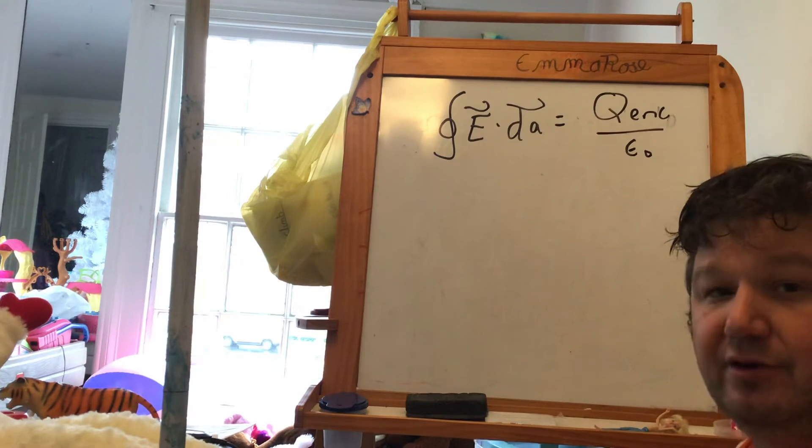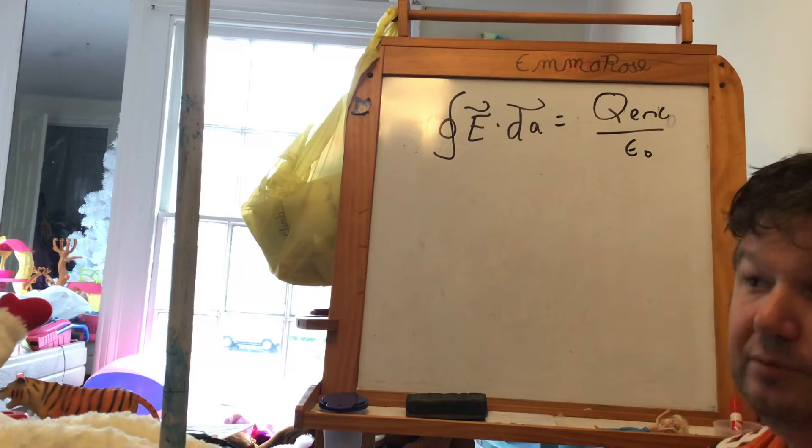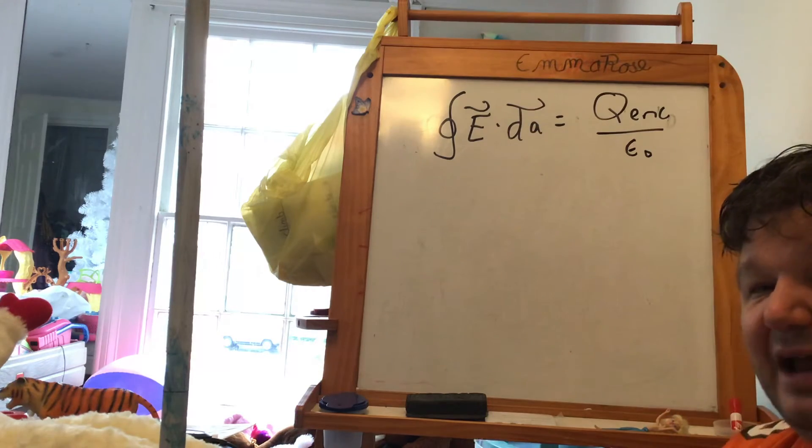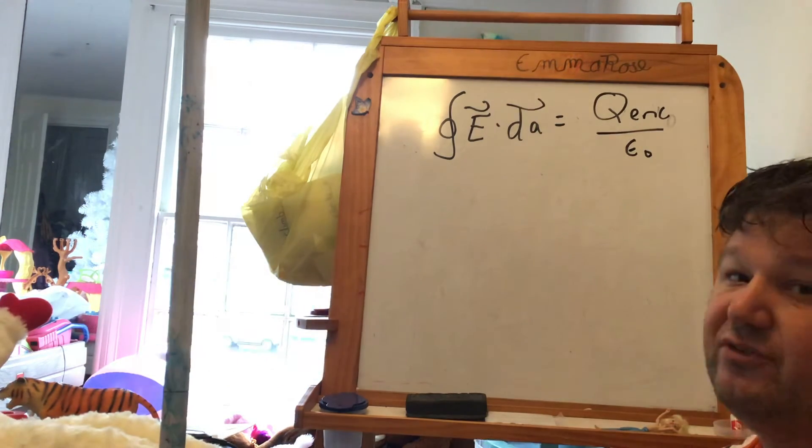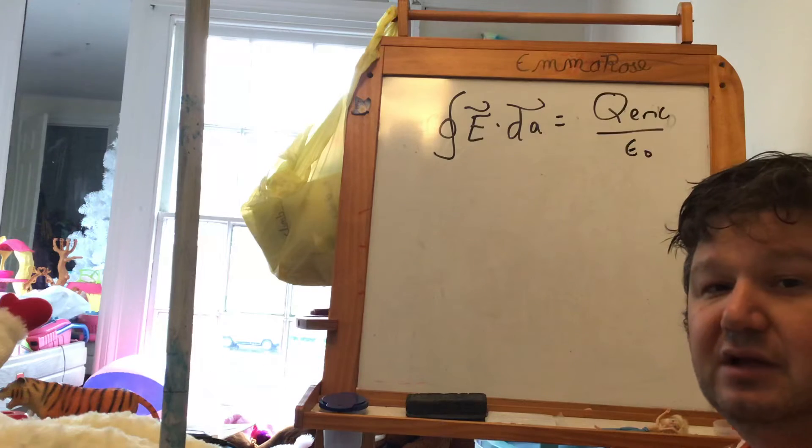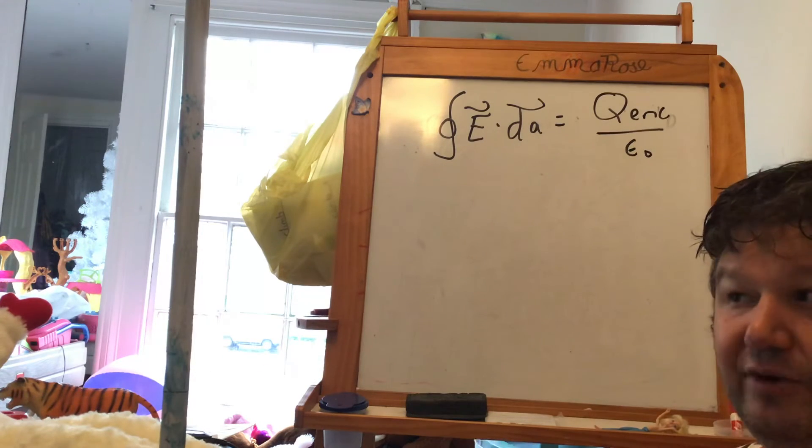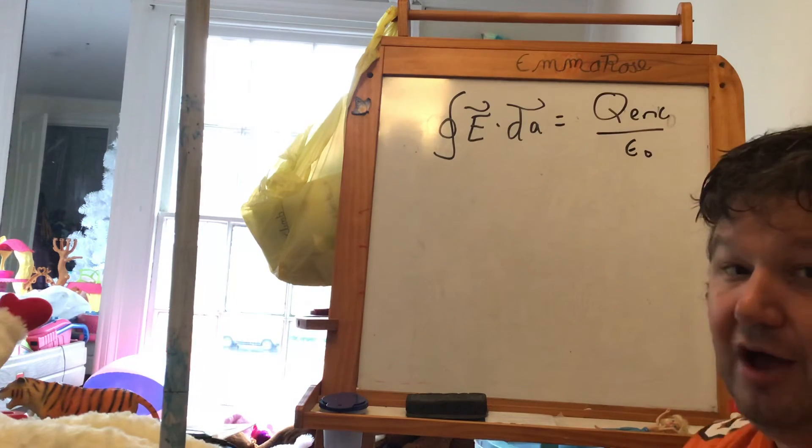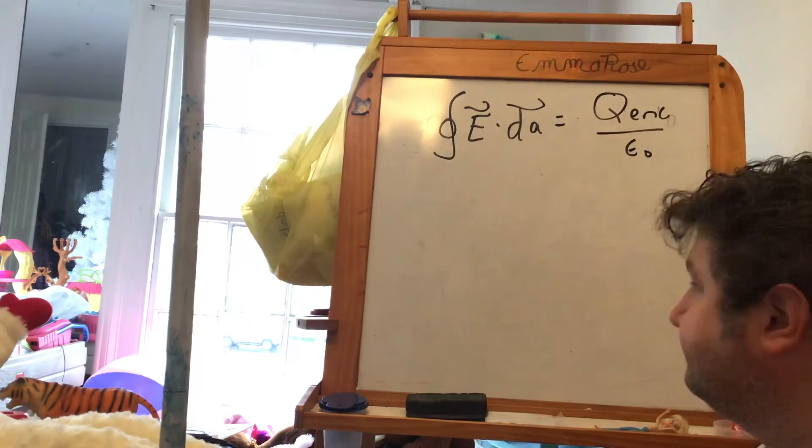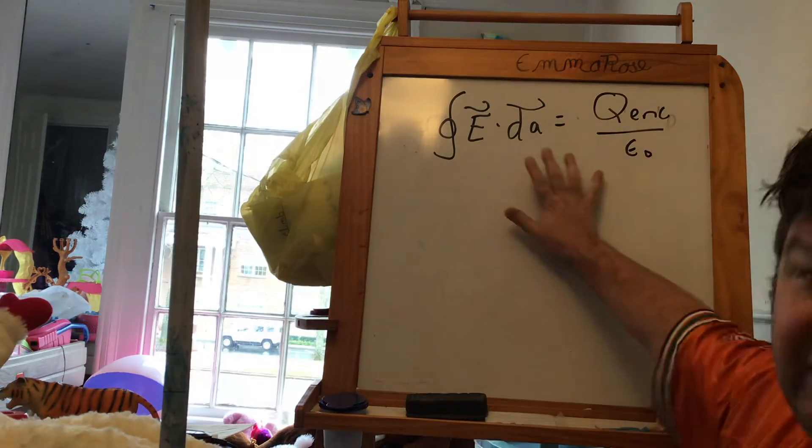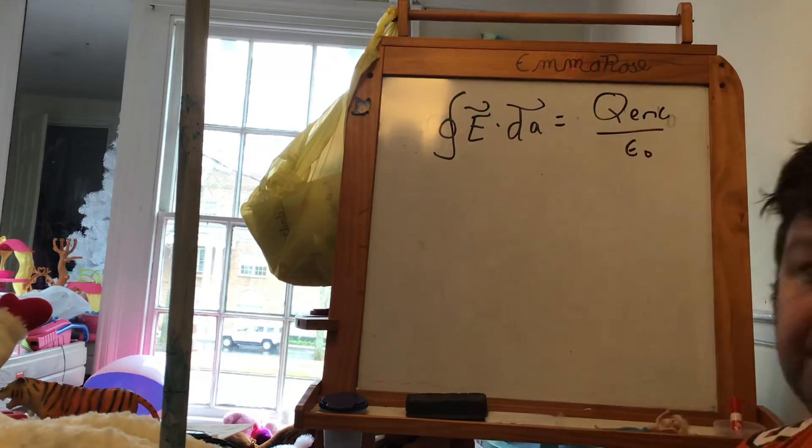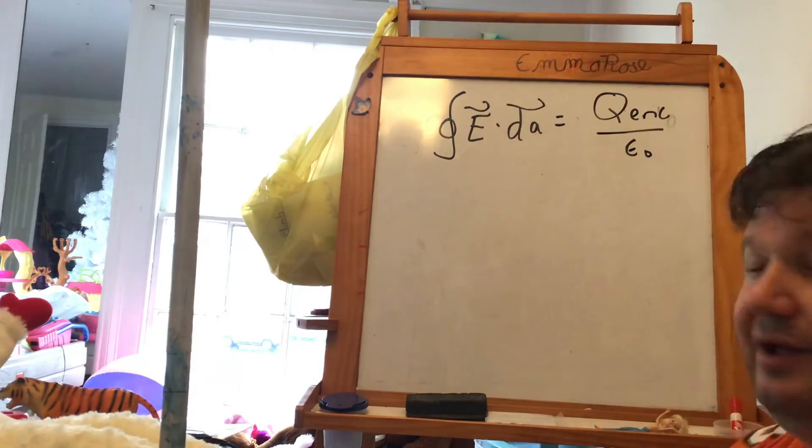So which one's more fundamental? Well, we start with Coulomb's law because it's how we kind of think when we're thinking about forces and how things interact. But if they're equivalent, why couldn't Gauss's law be the more fundamental thing? And so this is great. We call this the integral form. But there's another way of looking at this.